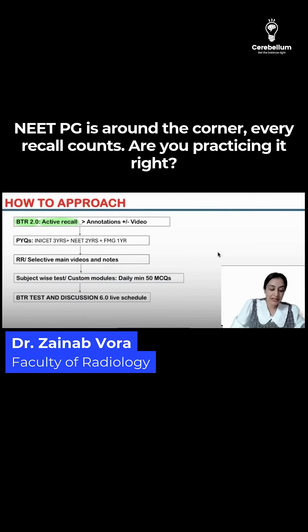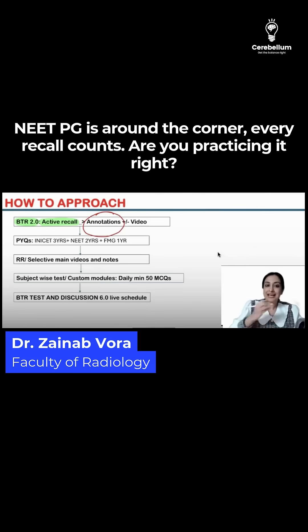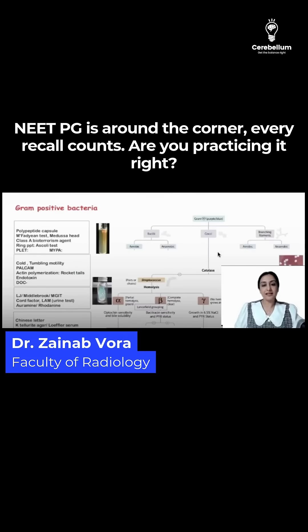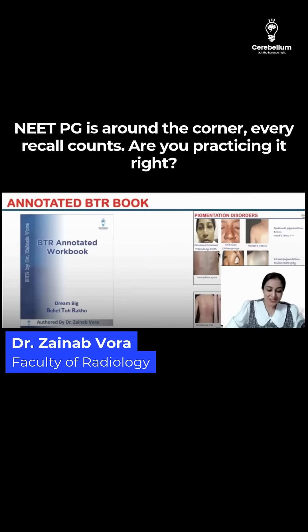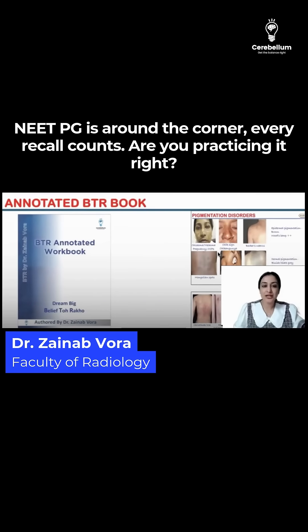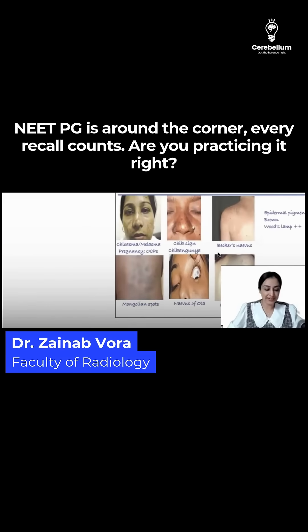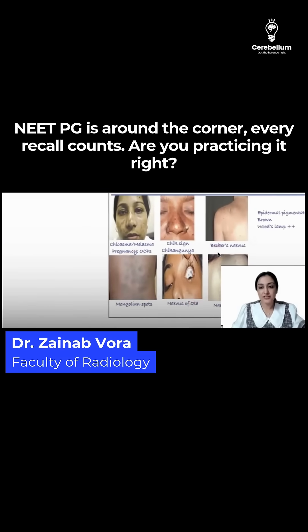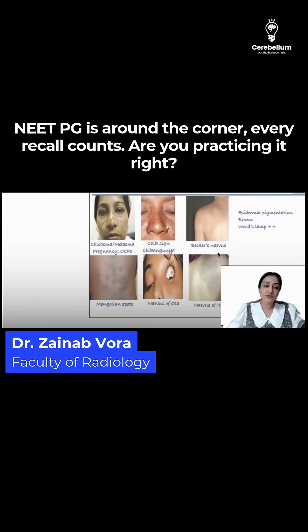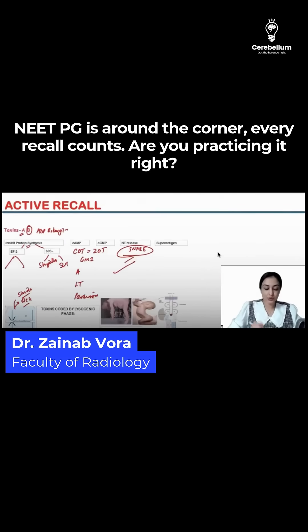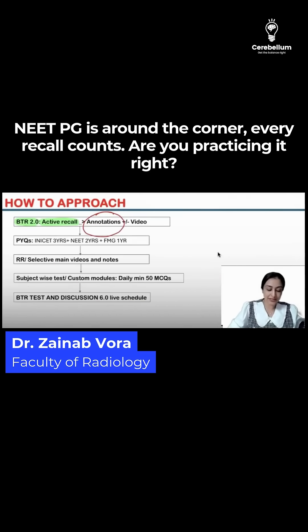You will first do active recall. If you have already annotated your book, you will read that annotated book — that 'golden khichdi' that you have made. Now is the time to read it. After one round of active recall, if you are a lazy person, there is also an auto-annotated BTR book available. Somebody has already typed it out for you, so you just read it — you don't have to write it. You will read this and you will remember it. So either read your own annotations or read the auto-annotated book.